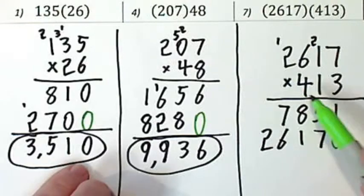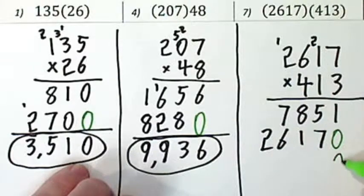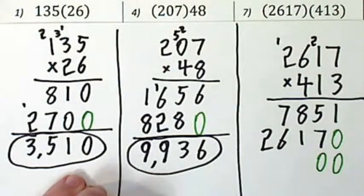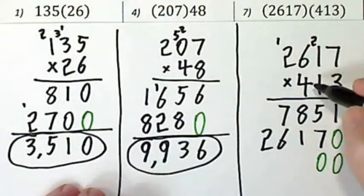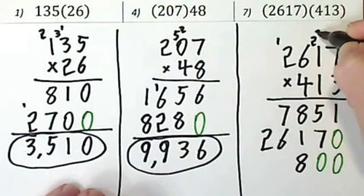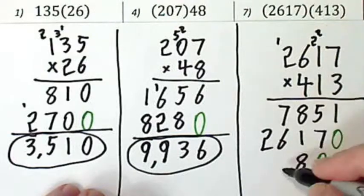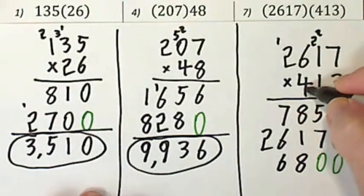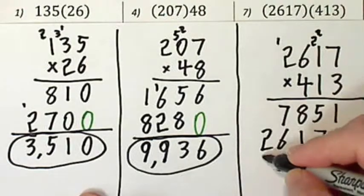Now before I start multiplying by a four, I have to put in two zeros because this is over in the hundreds place. Now I proceed with multiplying. Four times seven is twenty-eight. That's four, five, six.